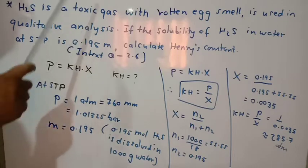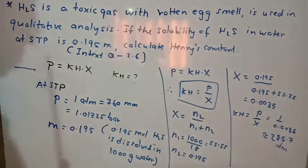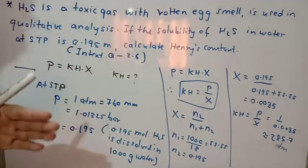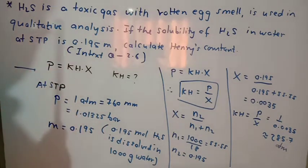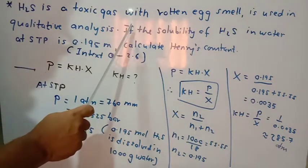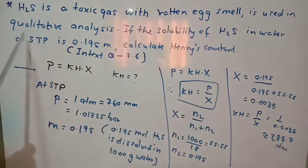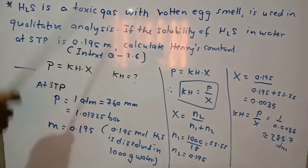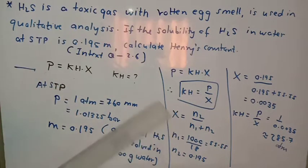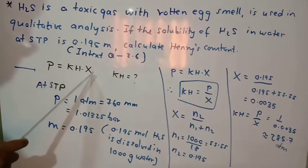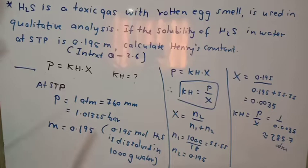Here we have the first numerical — in-text question number 2.6. The question is: H2S is a toxic gas with a rotten egg smell. If the solubility of H2S in water at STP is 0.195 molar, calculate Henry's constant. Our core equation is P = KH × χ. Since only one unknown is allowed per numerical, we need to find both χ and P. Let us find these two terms.